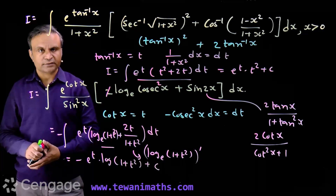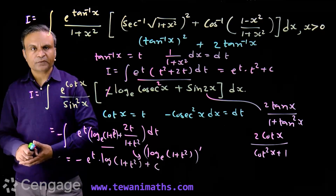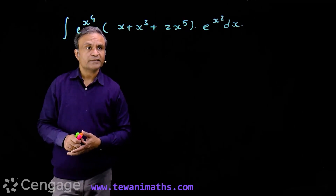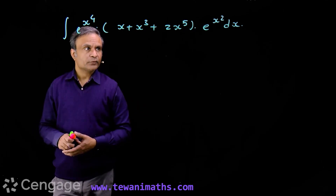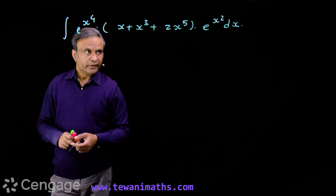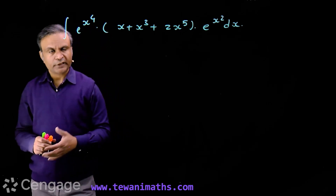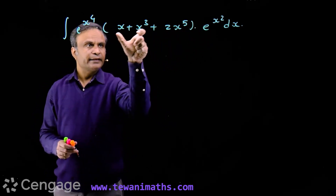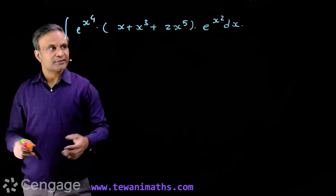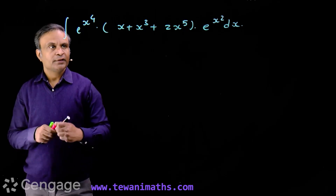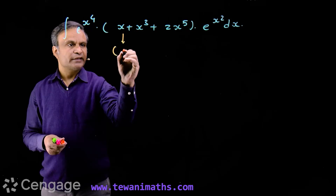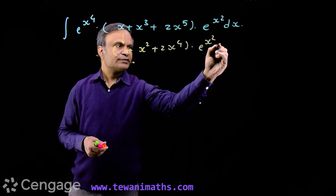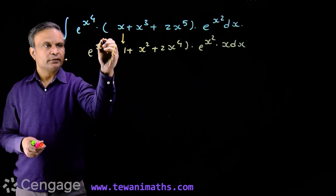Now substitute back t equal to cot x to get the final answer. Let us try one more interesting question. We have the integrand e raised to x⁴, multiplied by the bracket (x plus x³ plus 2x⁵) multiplied by e raised to x². Here we notice even powers of x in the exponents — x⁴ and x² — while inside the bracket we have odd powers. We can take x common from the bracket to get x(1 plus x² plus 2x⁴), multiplied by e^(x²), multiplied by x dx, and e^(x⁴).